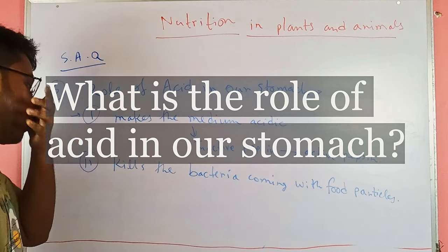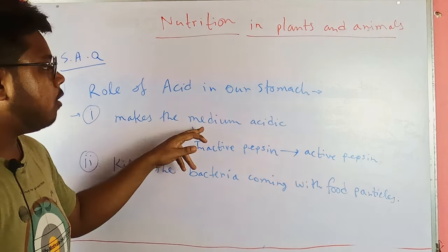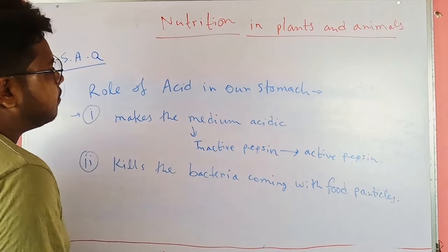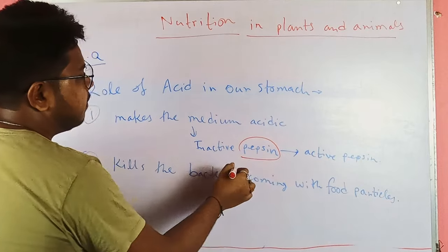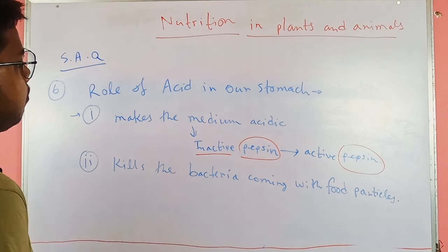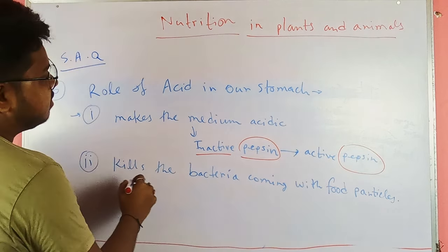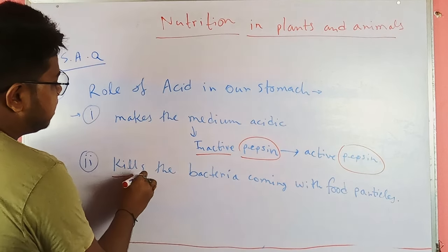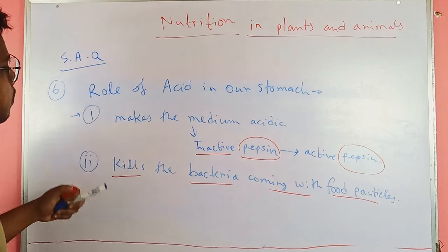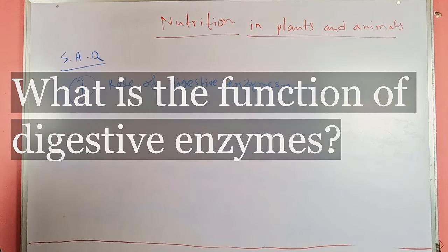What is the role of acid in our stomach? There are two main roles. First, it makes the medium inside the stomach acidic, which activates the main enzyme pepsin — the inactive pepsin becomes activated and breaks down food particles to start digestion. Second, the acidic environment kills bacteria that come along with food particles.